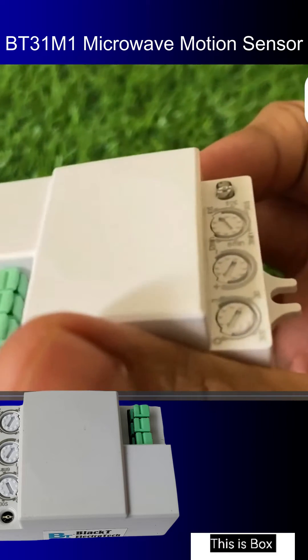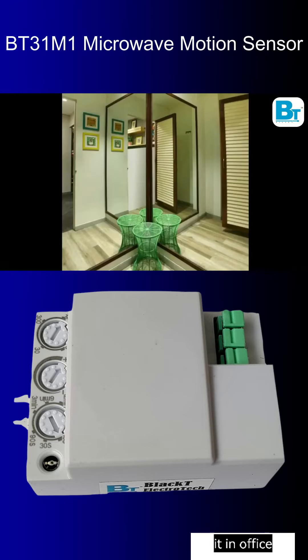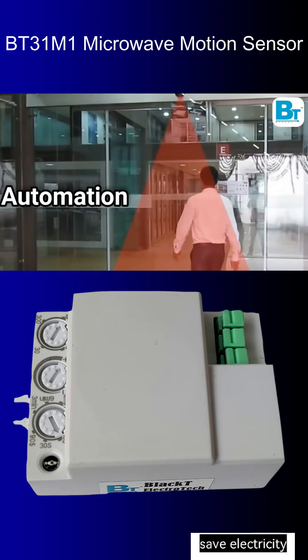Hello friends, this is Box Type Black T Electrotech Microwave Motion Sensor. You can use it in office, gallery or places where you want to save electricity.